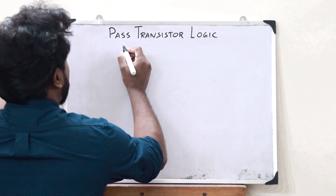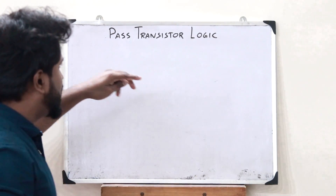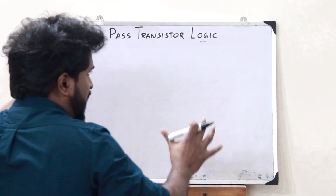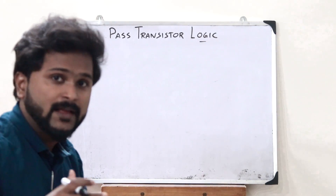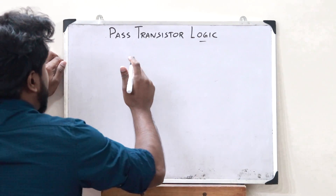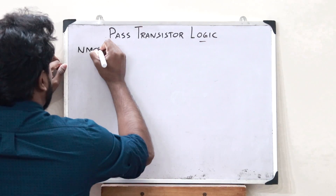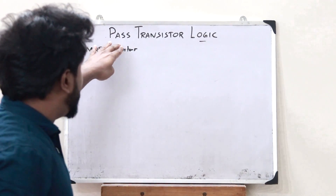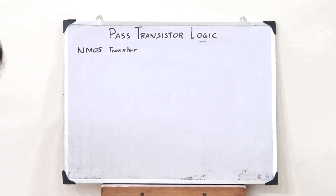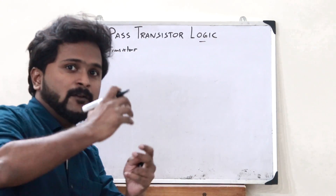Pass transistor logic — just like the name suggests, this is basically a logic that we implement with the help of NMOS transistors. Because we are implementing the pass transistor logic with NMOS transistors, this is an NMOS logic.